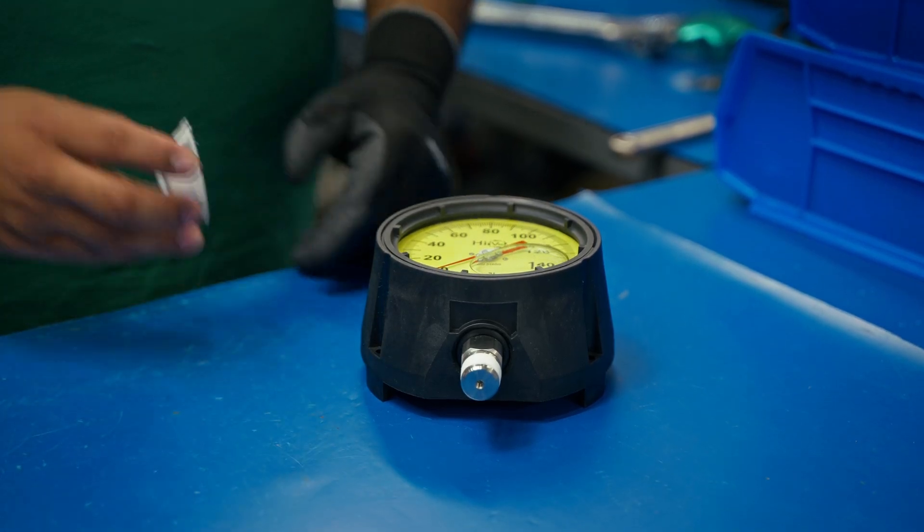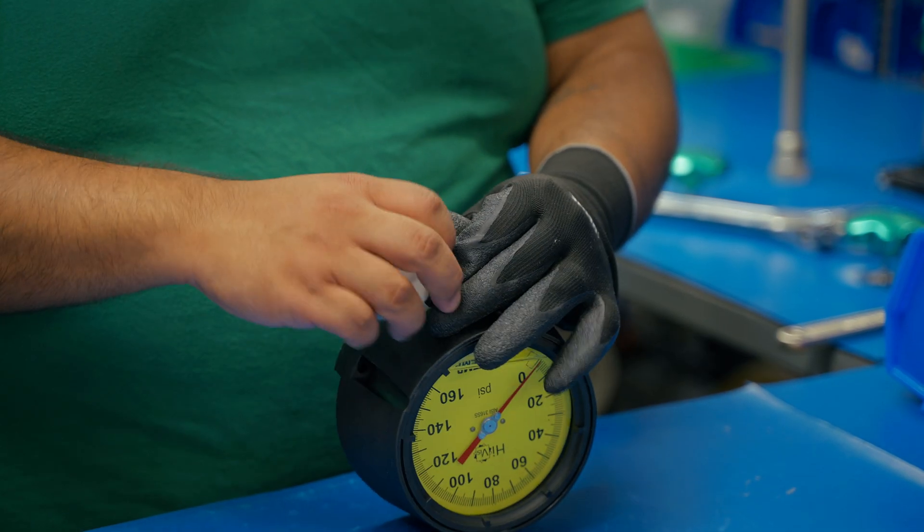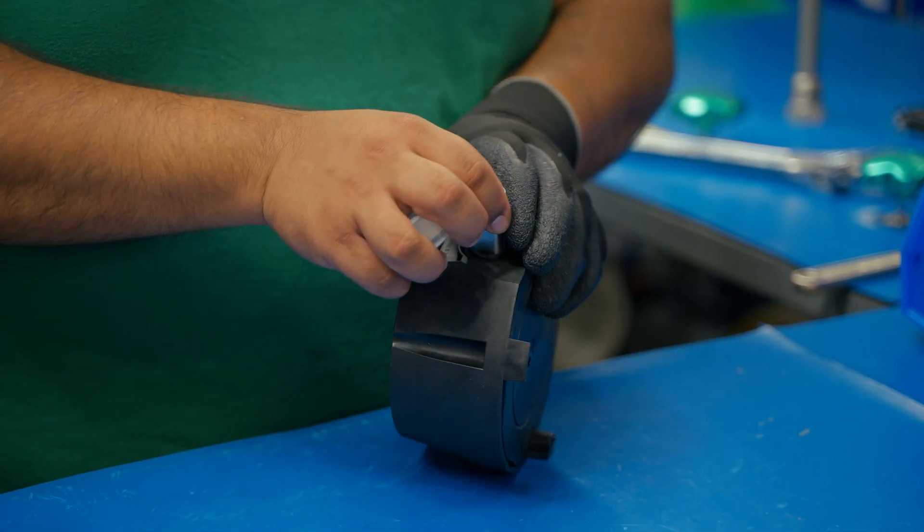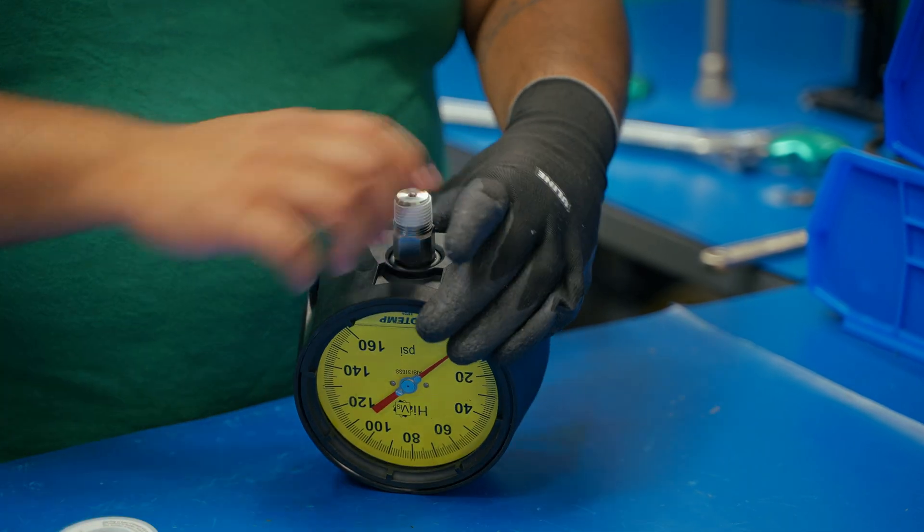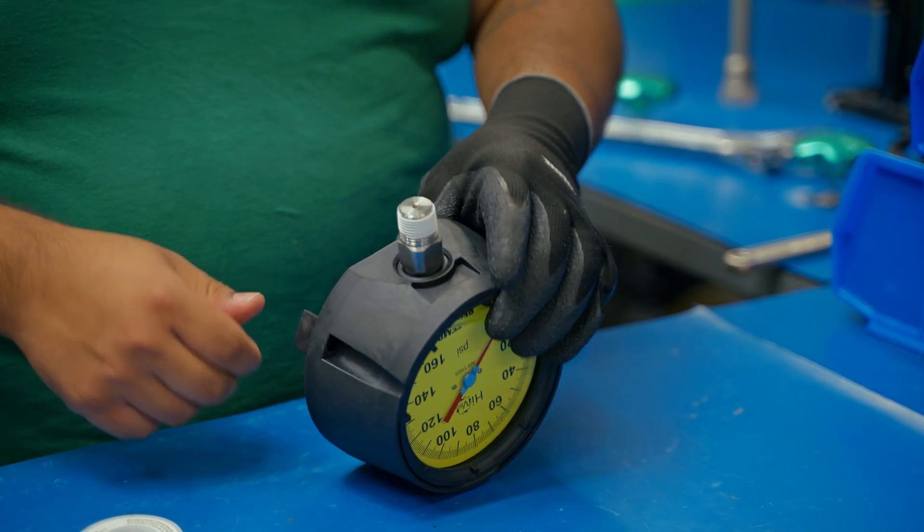Use either Teflon tape or a compatible liquid dope. We're using Teflon tape. Keep the first two threads clean to prevent debris entering the system. Use one and a half wraps starting two threads back.